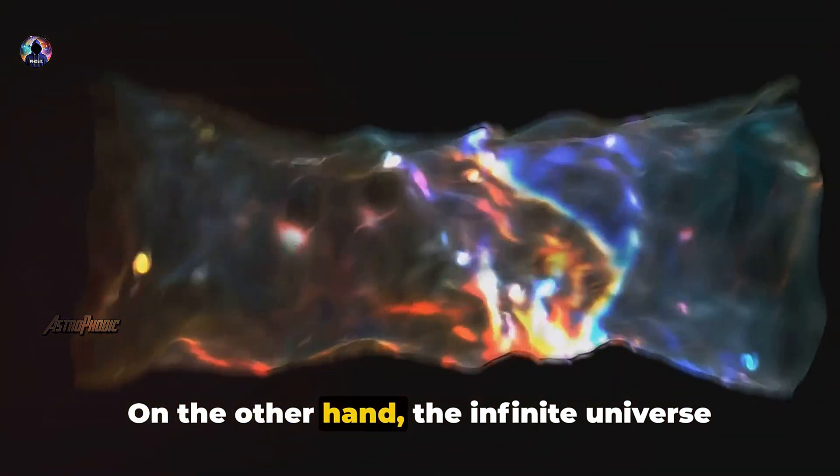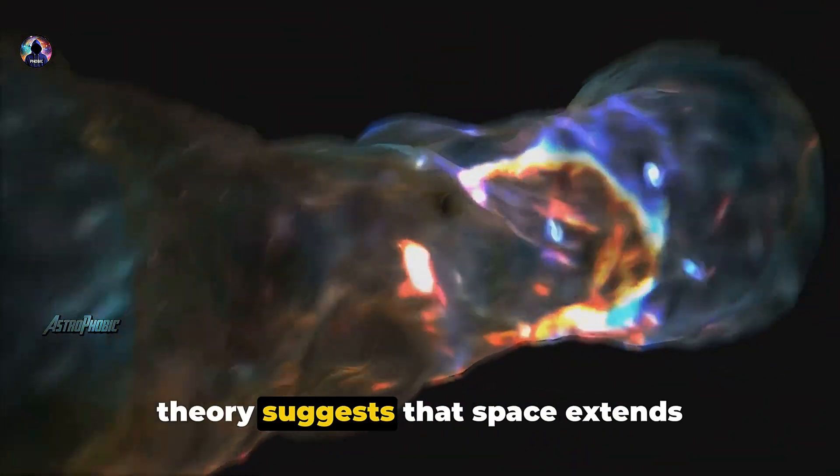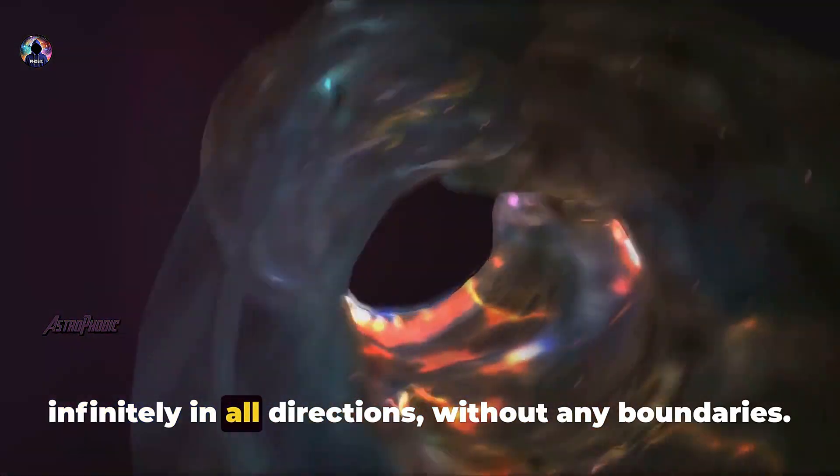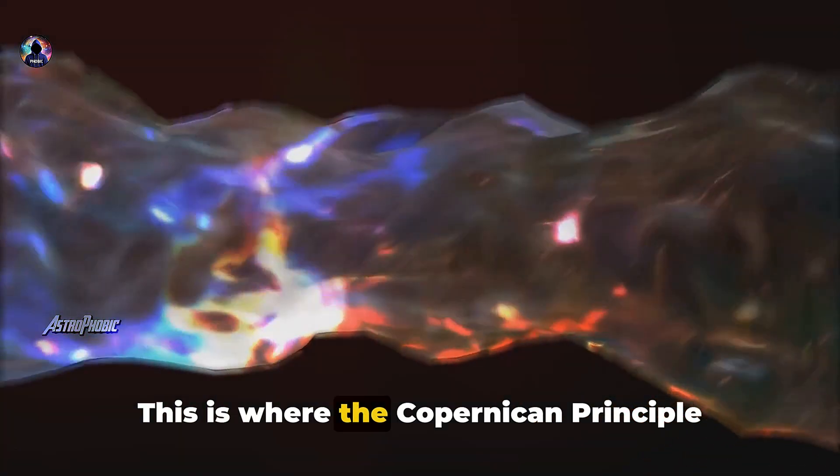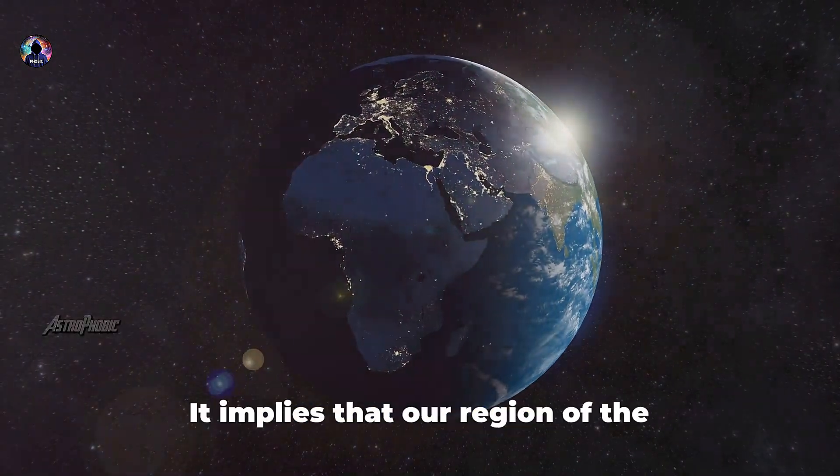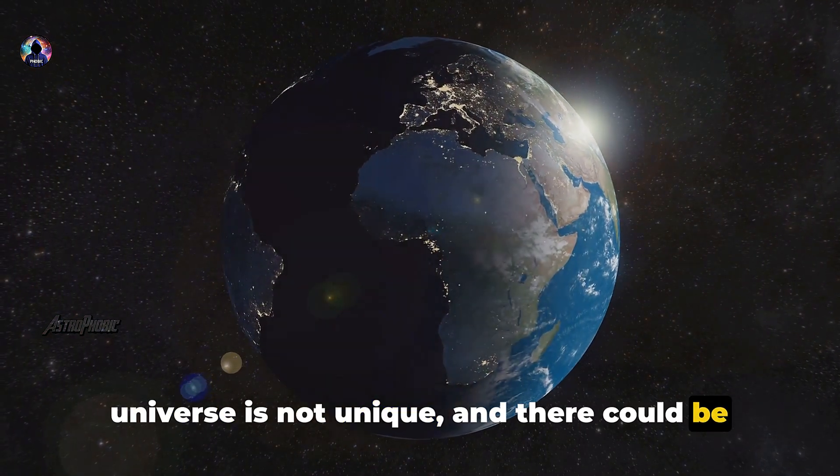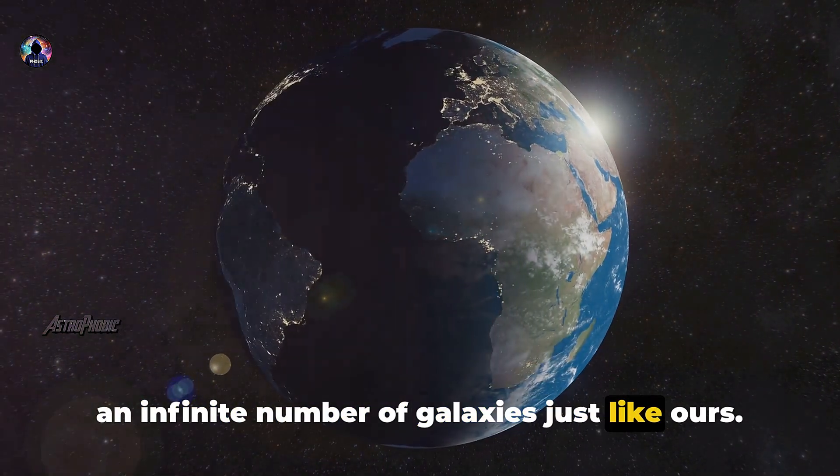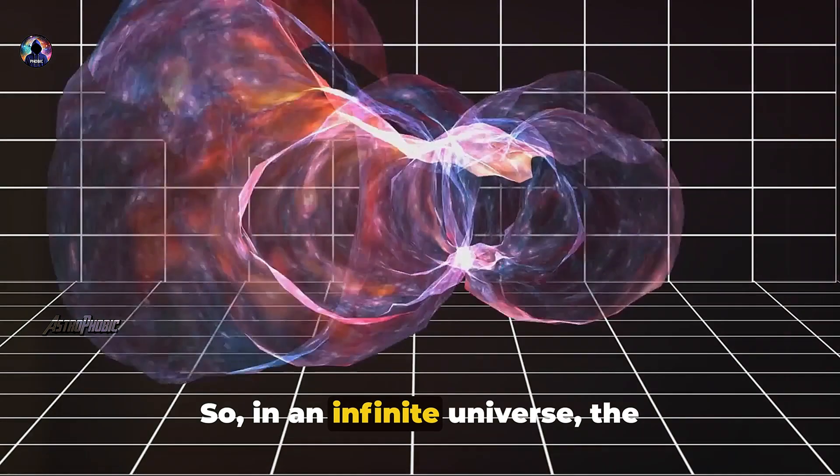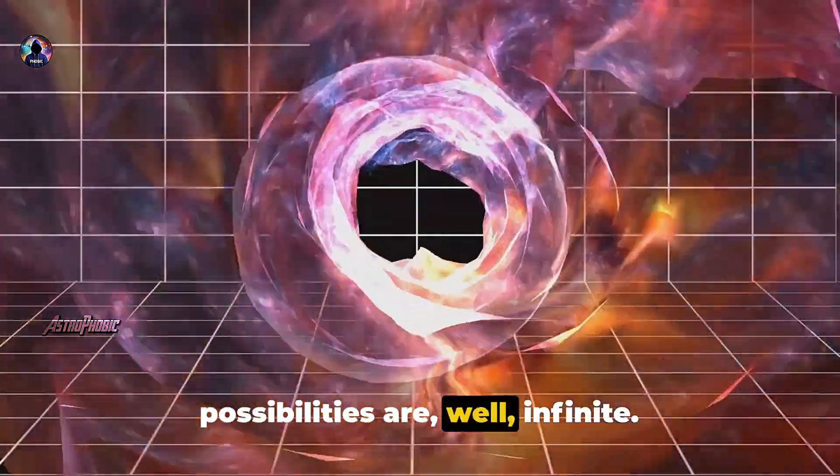On the other hand, the infinite universe theory suggests that space extends infinitely in all directions without any boundaries. This is where the Copernican principle comes into play. It implies that our region of the universe is not unique and there could be an infinite number of galaxies just like ours. So in an infinite universe, the possibilities are, well, infinite.